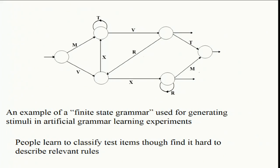This is one way of representing the rules used to generate those strings of letters — it's called a finite state grammar. The states refer to the circles. Finite because you just draw a finite number of circles. Connect them by arrows. Then make a path through the diagram, and every time you change state you produce a letter. So M T T T V R X V R X V is grammatical according to this grammar — any string that can be produced by a pathway through the grammar is grammatical.